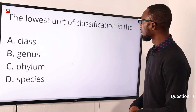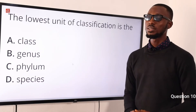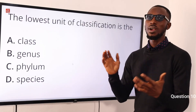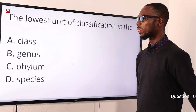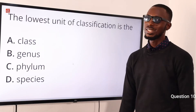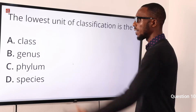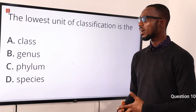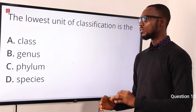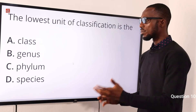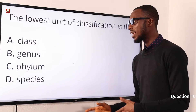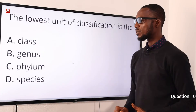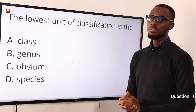Question 10. The lowest unit of classification is what? We have kingdom, phylum, class, order, family, genus, and species. The correct option is species. Kingdom is first, then phylum, then class, then order, then family, then genus, then species. When you talk about binomial nomenclature, you are giving two names — for example for maize we have Zea mays, and for rice, Oryza sativa. That's the genus and the species. The correct option is option D for species.